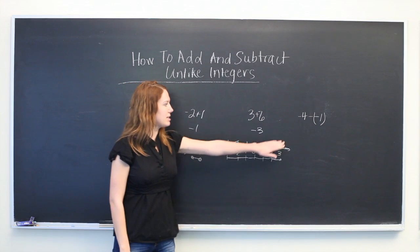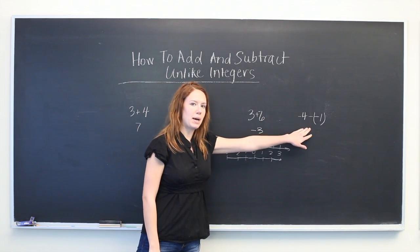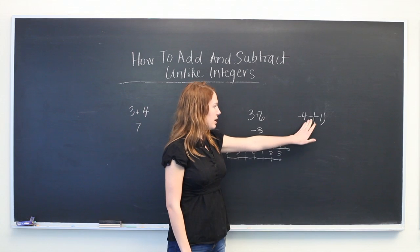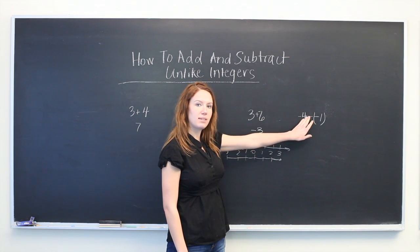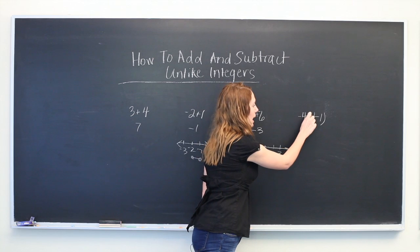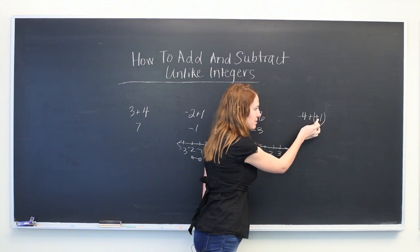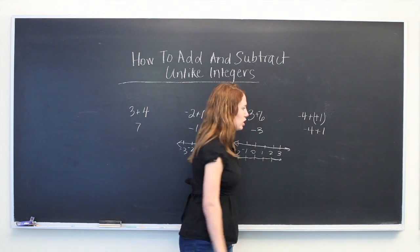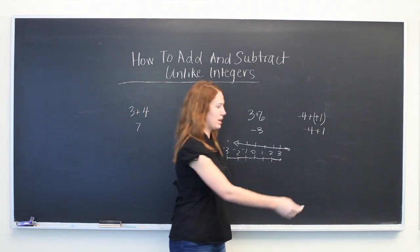Our last example is -4-(-1). What we're going to do in this case is instead of subtracting -1, we're going to add the opposite. So we have -4+1, which we know to be -3.